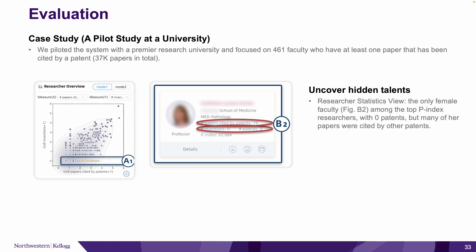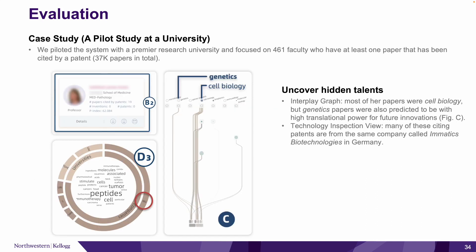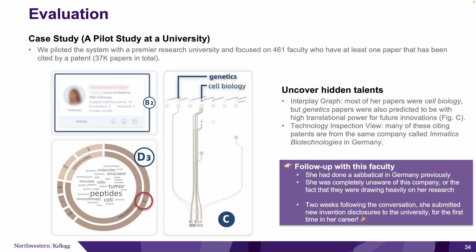After ranking these researchers by P-index, we quickly noticed that the second faculty was the only female faculty among the top P-index researchers. She had no inventions, but many of her papers have been cited by other patents. Most of her papers were in the cell biology research topic, but the genetics papers were also predicted to have high translational power for future inventions. We also found that many of these citing patents are from the same company called Emetic Biotechnologies in Germany. This discovery made our experts hold an immediate follow-up conversation with this faculty member. It turned out that while this faculty had done a sabbatical in Germany, she was completely unaware of this company or the fact that they were drawing heavily on her research. So informing her of these facts, two weeks after the conversation, she submitted new invention disclosures to the university for the first time in her career.